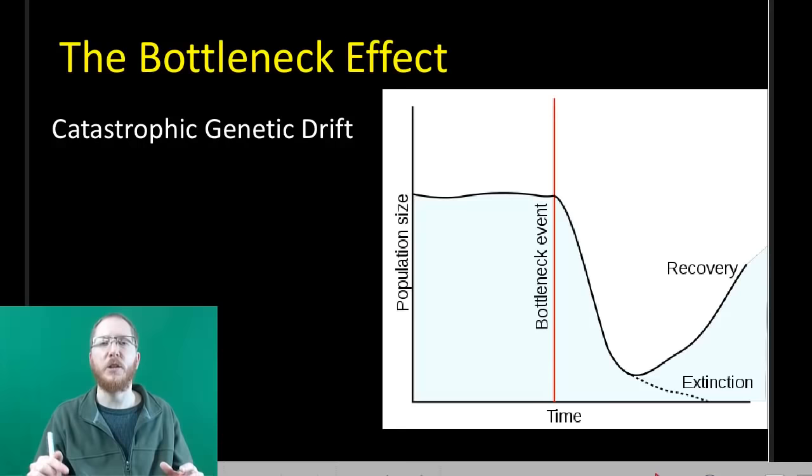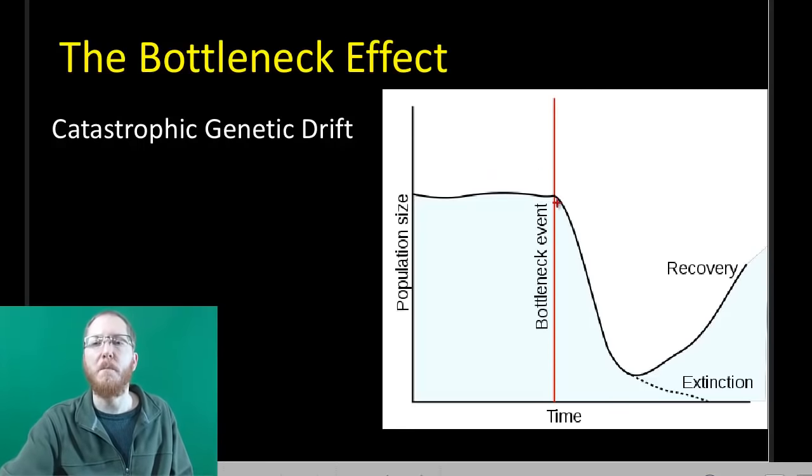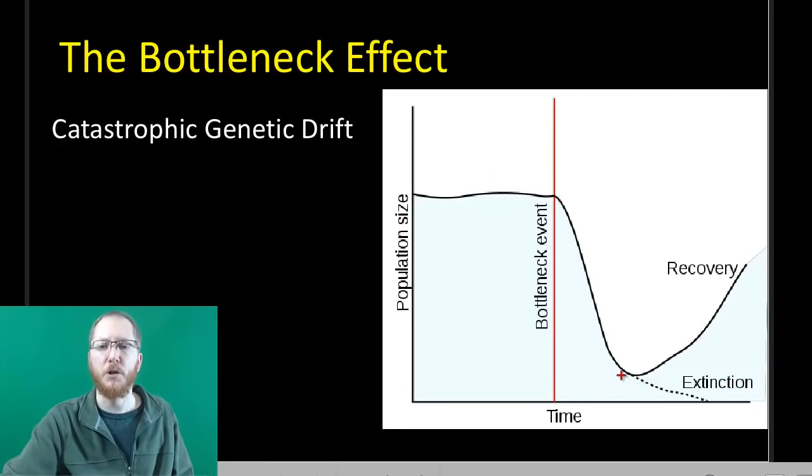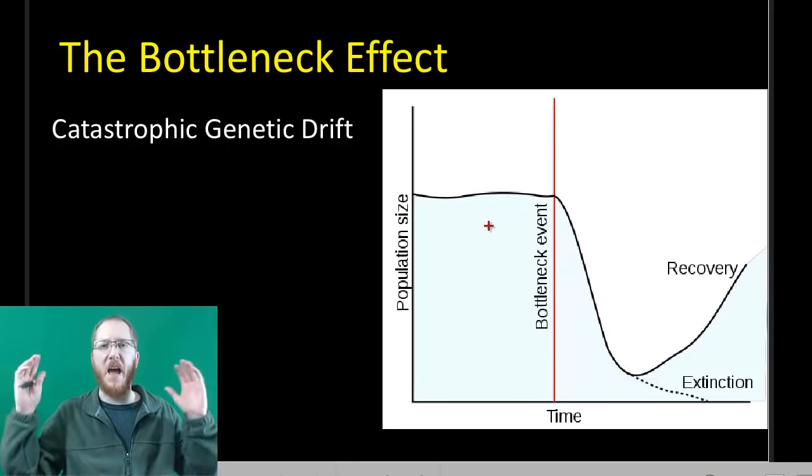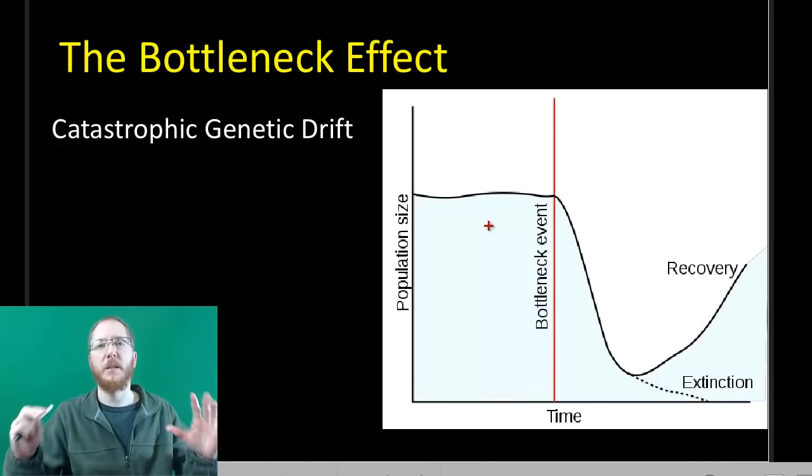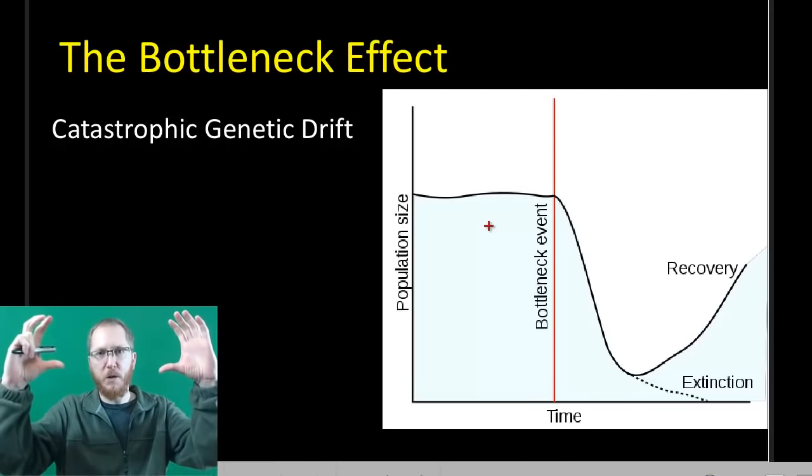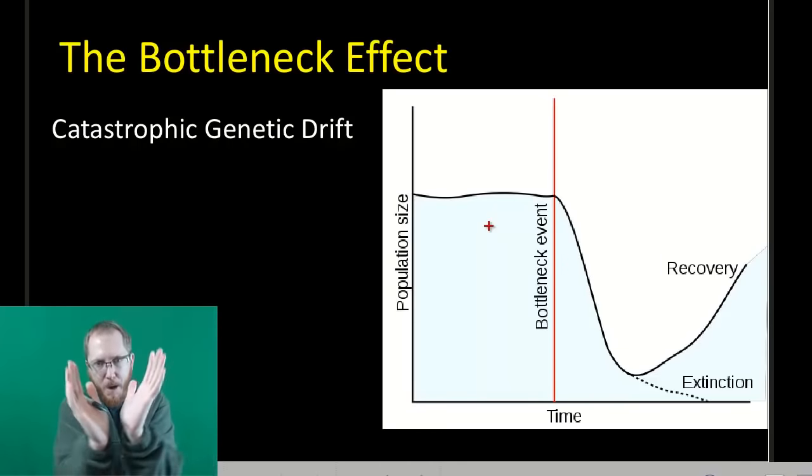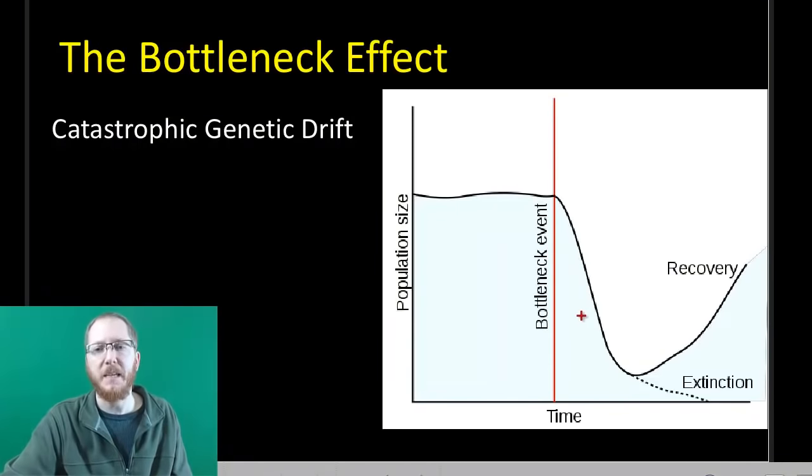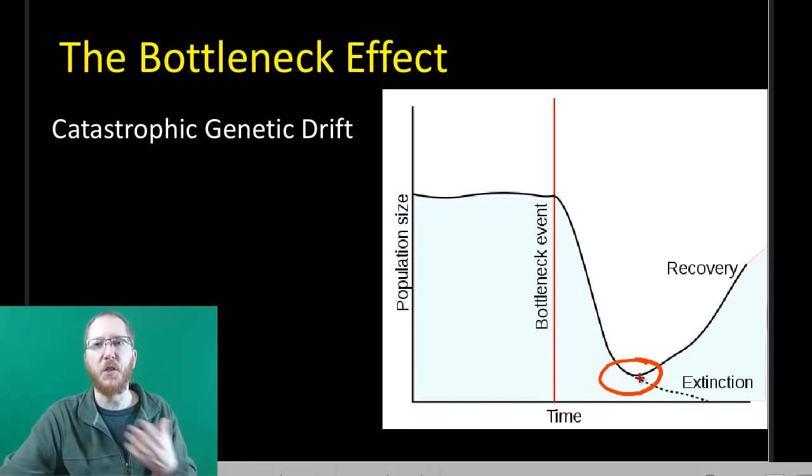Now there's two ways genetic drift can go down. The first is that you have one big event that just wipes out much of the original population. So you started off with a happy, healthy, large population that was relatively stable. Volcanic eruption occurs, a new predator is introduced, something happens, a drought that limits the amount of food, where most of the individuals are wiped out. It's like when you have a bottle and you try to pour something out, there's a lot of liquid in there, but only a small amount can get out because it bottlenecks. It's the same idea here.